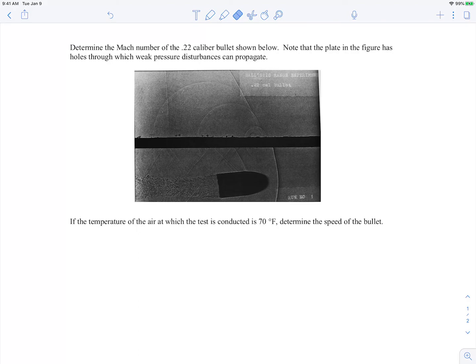In this example we're told we have a .22 caliber bullet and we want to determine the Mach number of the bullet based on the image. And we're told that the bullet is traveling along, you can see it here, you can see a shock wave that forms in front of the bullet.